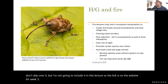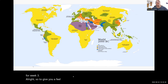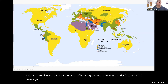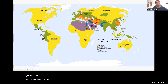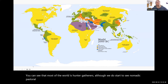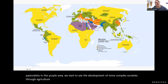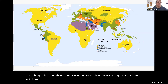To give you a feel of the types of hunter-gatherers in 2000 BC — about 4,000 years ago — you can see that most of the world is still hunter-gatherers. Although we do start to see nomadic pastoralists and the development of more complex societies through agriculture, state societies are just starting to emerge about 4,000 years ago as we start to switch from hunter-gatherers into what we'll call agrarian societies.